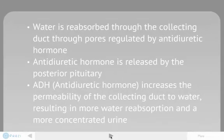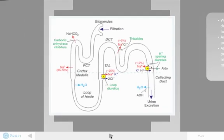Water is reabsorbed through the collecting duct through pores regulated by antidiuretic hormone. Antidiuretic hormone is released by the posterior pituitary. ADH increases the permeability of the collecting duct to water, resulting in more water reabsorption and a more concentrated urine. Here is a picture schematic of the nephron and what I've just explained.